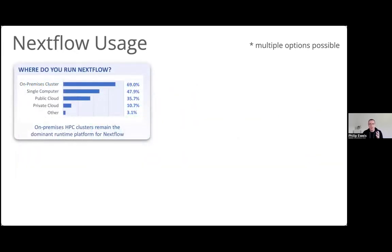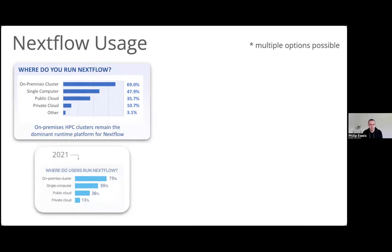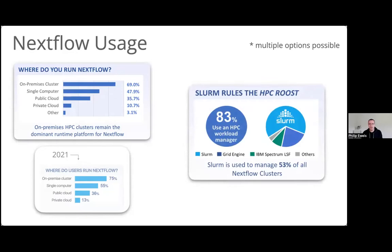When it comes to compute environments, the majority are still running on HPCs and on-premises clusters as well as single computers — similar to last year — and that's not something we expect to change massively. But there is an uptick in the number of people using cloud, particularly private clouds. For those running with HPCs, the majority use Slurm — definitely the most common scheduler — followed by Grid Engine, which is again similar to last year.